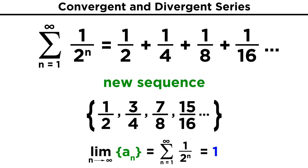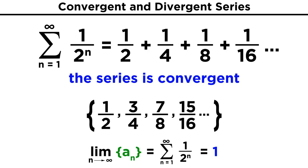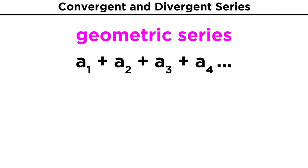Therefore, the sum of this series is equal to one, and we can say that it is convergent. Different types of series will have different requirements for convergence.